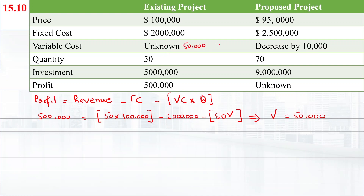The variable cost of $50,000 will decrease by $10,000. So the variable cost in the proposed product will be $40,000. After that, we will calculate the profits in the second situation.